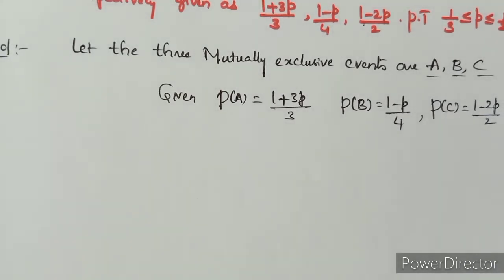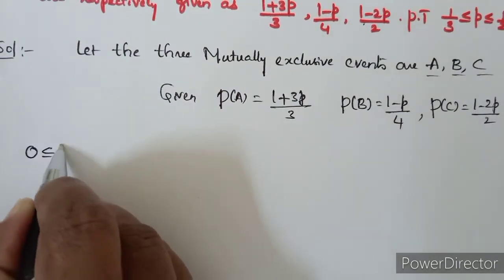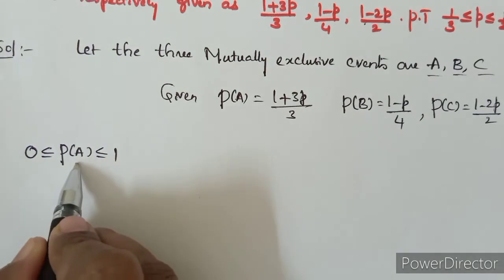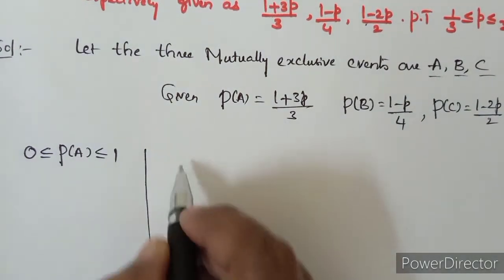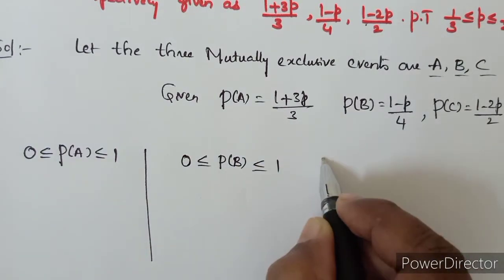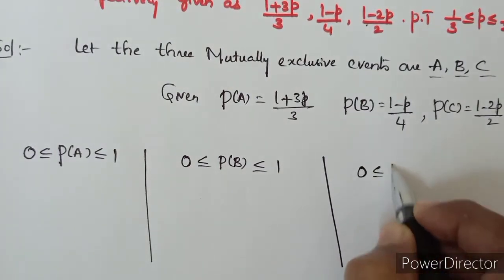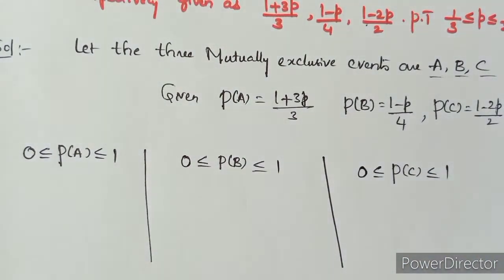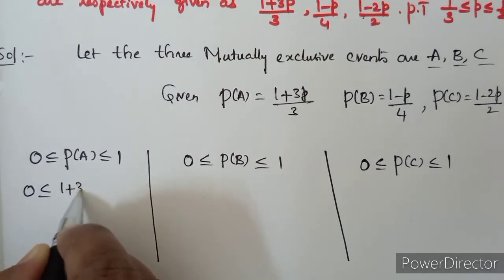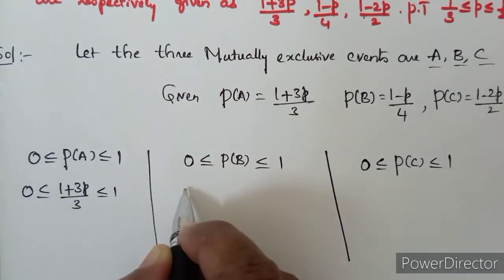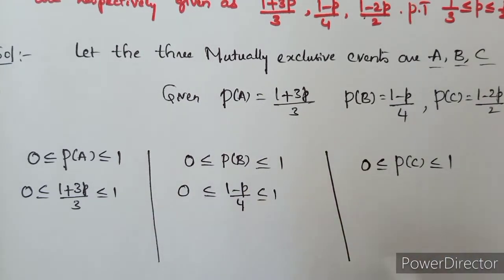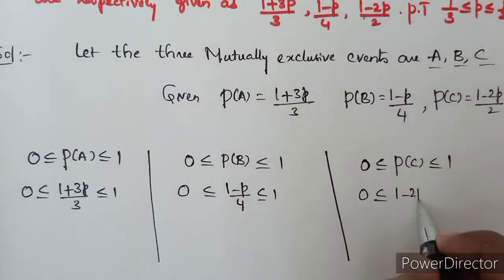For any event, probability should lie between 0 and 1. So P(A) also lies between 0 and 1. Similarly, P(B) lies between 0 and 1, and P(C) also lies between 0 and 1. We substitute: 0 ≤ (1+3p)/3 ≤ 1, 0 ≤ (1-p)/4 ≤ 1, and 0 ≤ (1-2p)/2 ≤ 1.